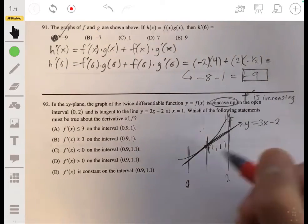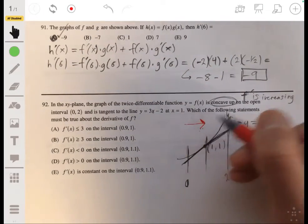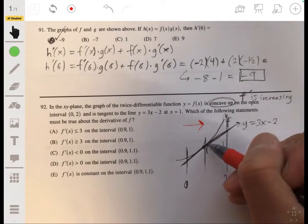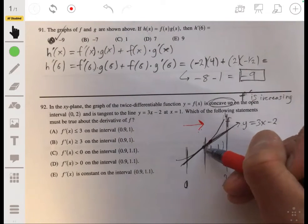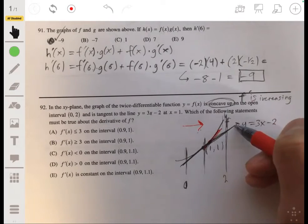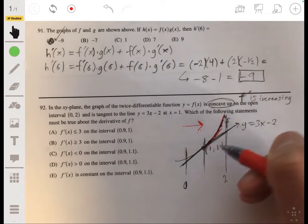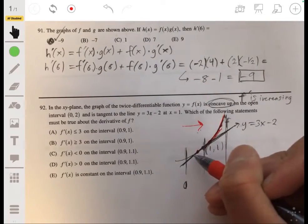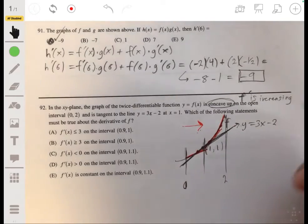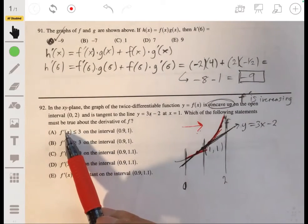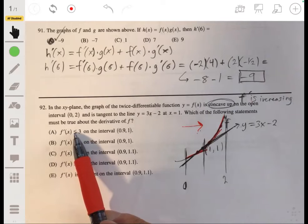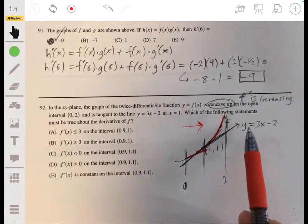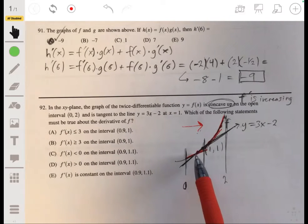Since this is concave up, this is telling you that the derivative is increasing or f prime is increasing. So as x gets larger and larger, f prime gets larger and larger, or the slopes get steeper and steeper. So if you did another tangent line here, it would be more steep than this line. Or if you did another one here, it would be more steep. But if you go to the left, they would be less steep. They'd be more flat. So what we can say is then that f prime of x is less than or equal to 3 on the interval before that, which is 0.9 to 1.